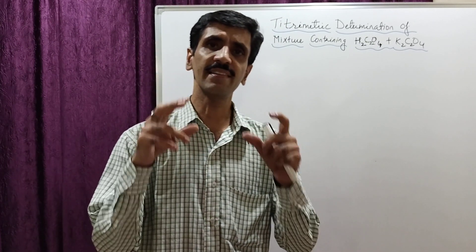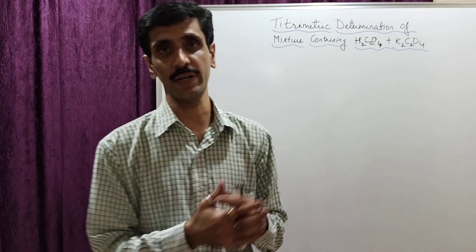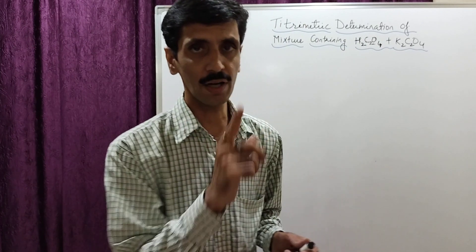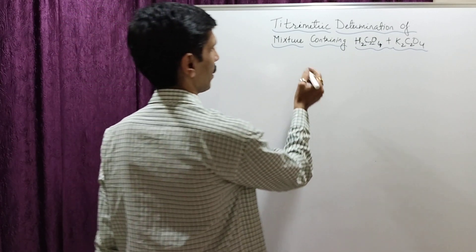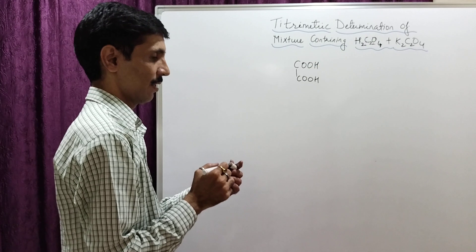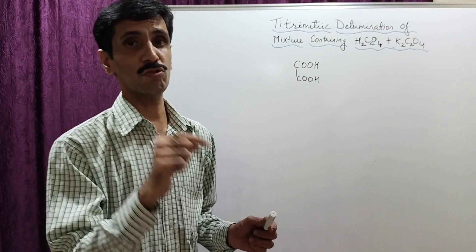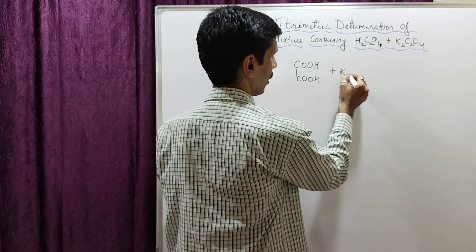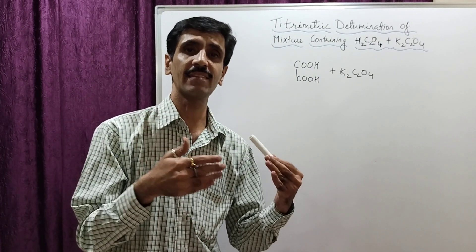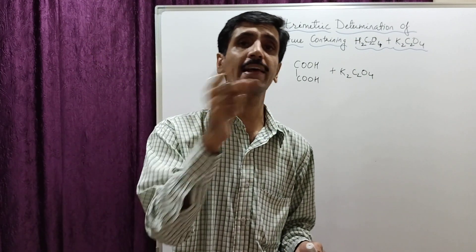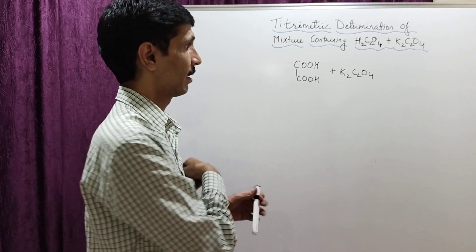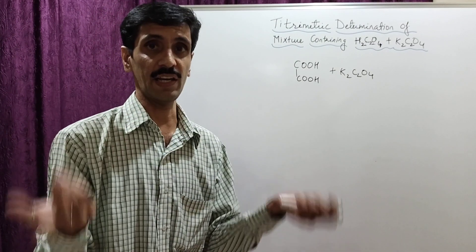We are starting with the theory. This is a mixture containing at least two components: oxalic acid and potassium oxalate. Oxalic acid is H2C2O4, also written as COOH. When treated with K2C2O4, which is the potassium salt of oxalic acid, H is replaced by a metal ion. Whenever H+ ions of a carboxylic acid or mineral acid are replaced by a metal ion, we call it a salt.